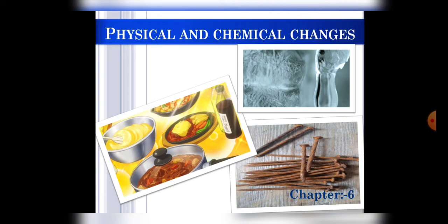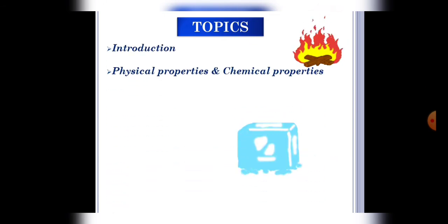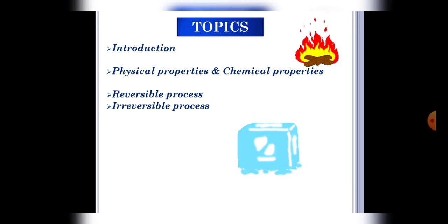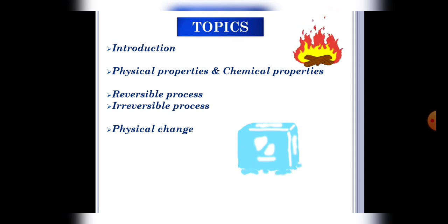So let's see what are the topics and subtopics which we are going to discuss in this chapter. First we will discuss physical and chemical properties followed by the introduction. Second, we will discuss reversible and irreversible process. Third, physical change. Next, chemical change, and some physical and chemical changes.